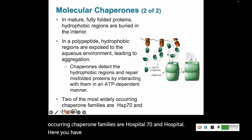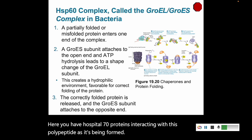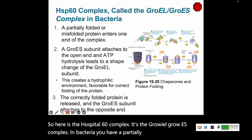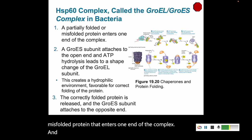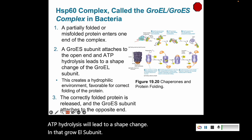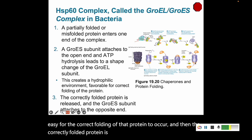HSP-70 proteins interact with the polypeptide as it's being formed. The HSP-60 complex — called the GroEL/GroES complex in bacteria — takes a partially folded or misfolded protein that enters one end of the complex. The GroES subunit attaches to the open end, and ATP hydrolysis leads to a shape change in the GroEL subunit, creating a hydrophilic environment that promotes correct folding. The correctly folded protein is then released and the GroES subunit attaches to the opposite end.